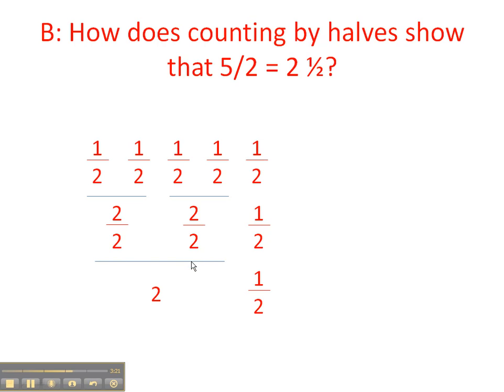Then if we bring that down another level, two wholes is equal to two. Because this two divided by two and two divided by two, that would be one. So one plus one equals two. That leaves us our half still left over. And we bring that down to the final level, that's two and one half. So counting by halves does prove that five over two is equal to two and a half.